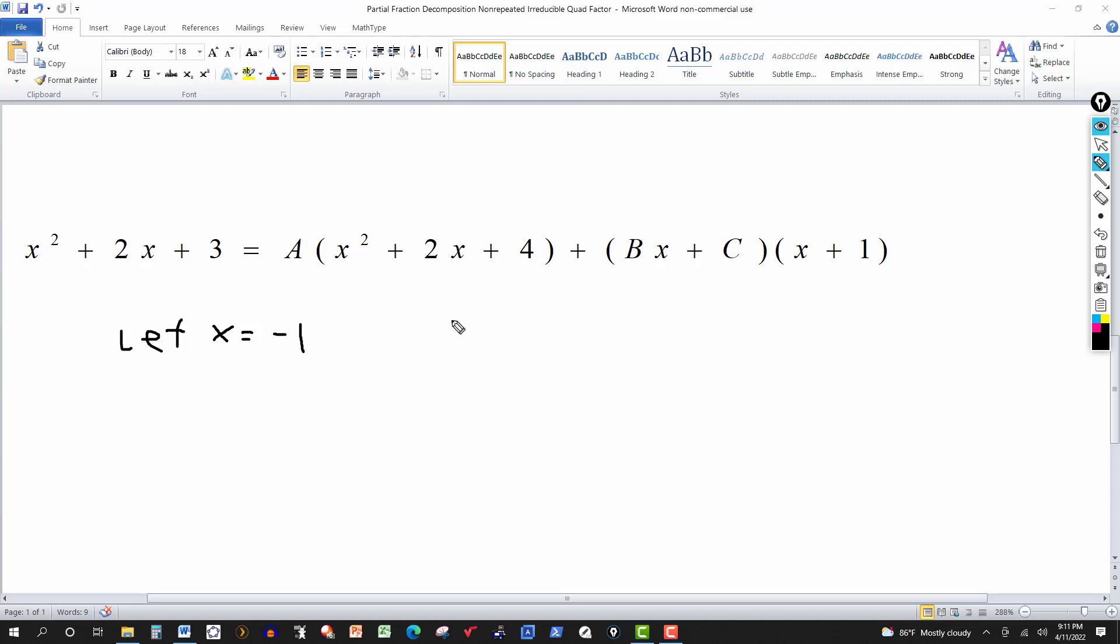And why did I pick negative 1? Well, I picked negative 1 because in this expression right here, I picked x to be negative 1. Negative 1 and 1 is 0. 0 times anything is 0. So that's going to wipe out this expression right here. So what does it leave me over here? Negative 1 here for x. That's negative 1 squared. It's 1. Negative 1 here. Negative 2 and 4 is 2. And then the 1 gives me 3. So this actually gives me then A times 3. I'll write the 3 in front. So this will be 3A.